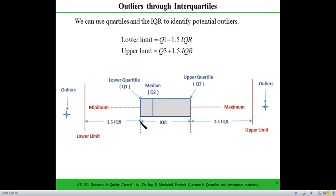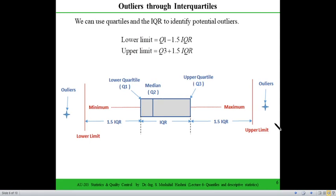The interquartile range is Q3 minus Q1. To get the lower limit, subtract 1.5 times the IQR from Q1. Whatever the IQR is, multiply by 1.5 and subtract from Q1 to get the lower limit — any data below this is an outlier. Similarly, for the upper limit, add 1.5 times the IQR to Q3; any data above this upper limit is considered an outlier.